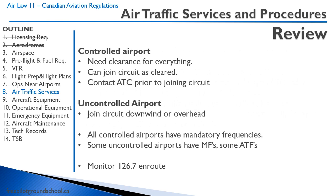At a controlled airport you need a clearance for everything, but you can join the circuit as cleared by ATC — contact air traffic control prior to joining. At an uncontrolled airport you must join the circuit either on downwind or overhead the field. All controlled airports have mandatory frequencies and you must have a radio and communicate on them. Some uncontrolled airports have mandatory frequencies; some have aerodrome traffic frequencies where you do not need to talk on the radio, but if you have a radio it is strongly encouraged. Monitor frequency 126.7 en route to provide position reports and keep abreast of other traffic in the area.